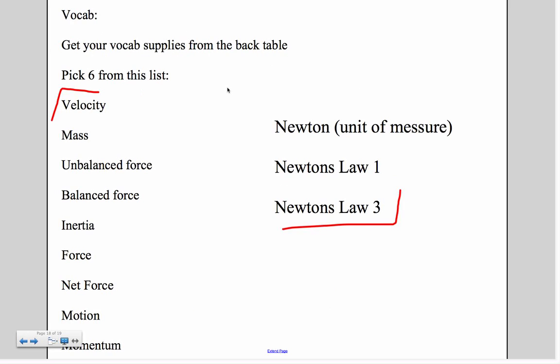The vocab for this week, there is quite a bit to pick from. You'll need to get your vocabulary supplies off of the back counter or table area. Your list has got to include four of the following. You cannot do Newton's law one and three. You must do one or the other. Same thing with balanced and unbalanced. You cannot do both. You have to pick which one you're going to do.